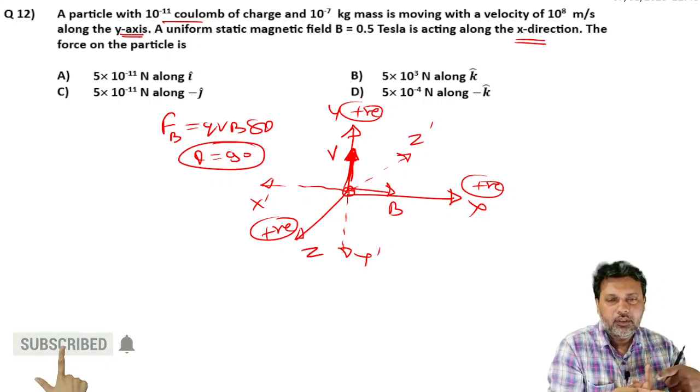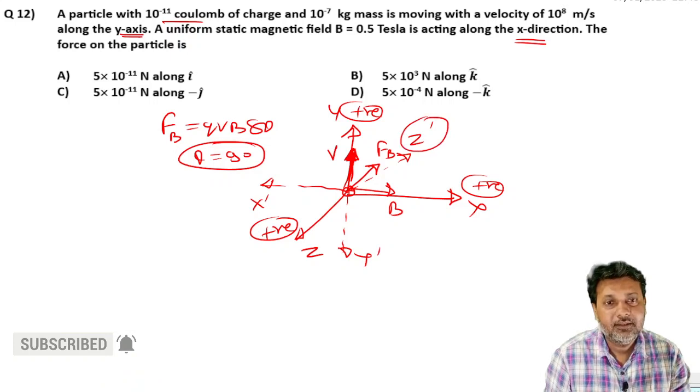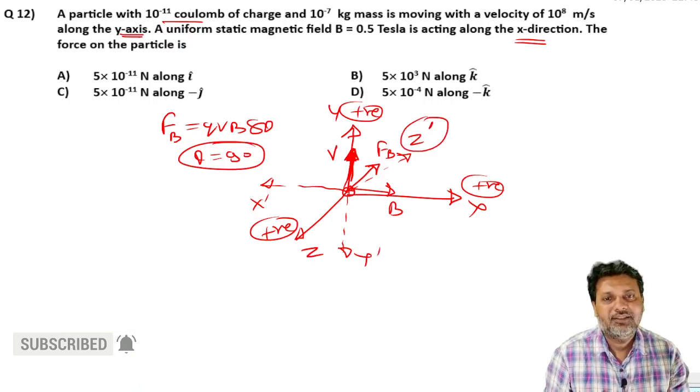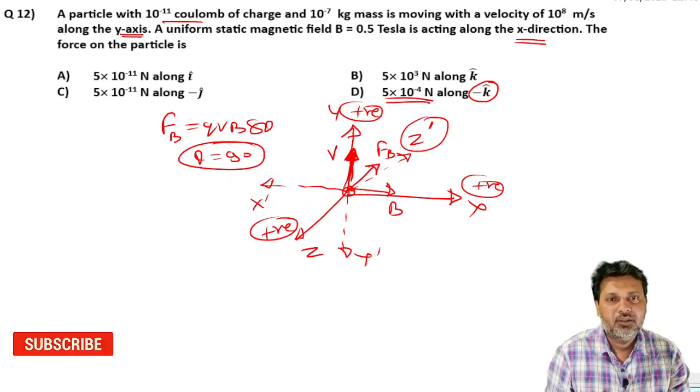The magnetic force will be in the negative z-direction. Looking at negative z-direction as minus k. So the minus k is one of the three options, the appropriate placement.